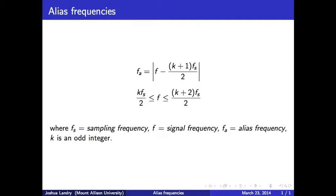The following two equations govern this. The inequality on the bottom must be satisfied and will yield a value for k, which can be used in the top equation. Note that if the sampling frequency is greater than twice the signal frequency, this inequality will never be satisfied.